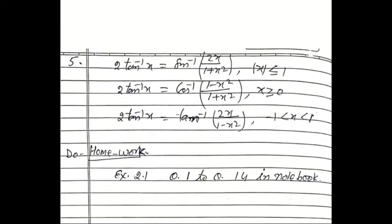Also, 2tan⁻¹x = tan⁻¹(2x/(1 − x²)), for |x| < 1. And 2tan⁻¹x = sin⁻¹(2x/(1 + x²)), for |x| ≤ 1. And 2tan⁻¹x = cos⁻¹((1 − x²)/(1 + x²)), for x ≥ 0. These are all the properties.